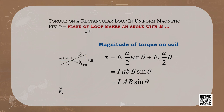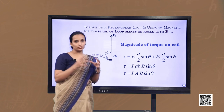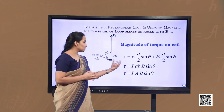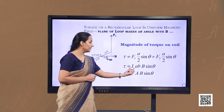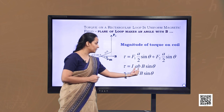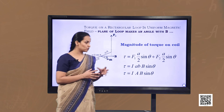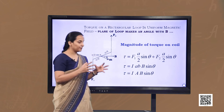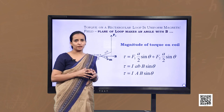We calculate the magnitude of torque as the sum of moments of forces: F1·(A/2)·sinθ + F2·(A/2)·sinθ. Substituting the values of F1 and F2, we get I·A·B·sinθ, where A is the area of the rectangular loop. So the torque is τ = IAB sinθ.